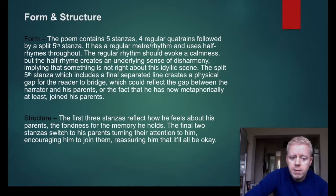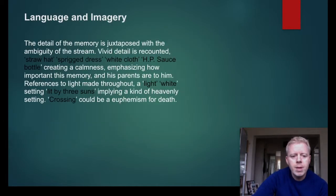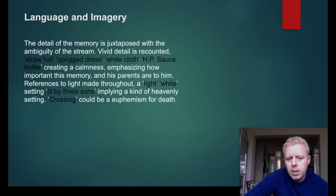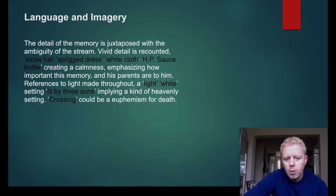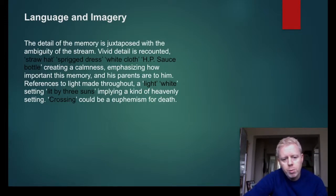In terms of structure, the first three stanzas reflect how he feels about his parents and the fondness for the memory he holds. The final two stanzas switch to his parents turning their attention to him, encouraging him to join them, reassuring him that it'll all be okay. On language and imagery: the detail of the memory is juxtaposed with the ambiguity of the setting. Vivid detail is recounted — the straw hat, the sprig dress, the white cloth, the HP sauce bottle — all creating a calmness, emphasising how important this memory and his parents are to him. References to light are made throughout, a light white setting lit by three suns, implying a kind of heavenly setting. Crossing could be a euphemism for death — crossing over into the afterlife.